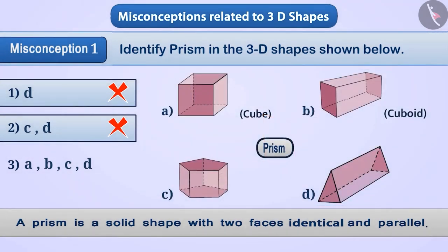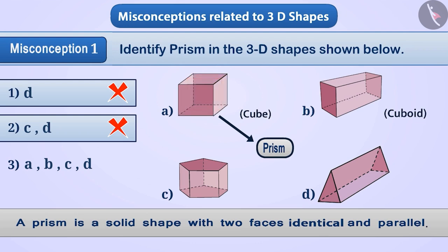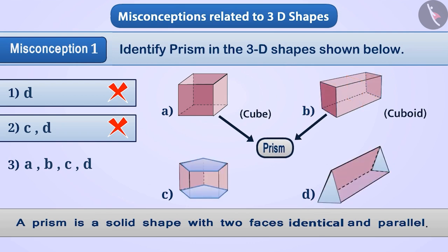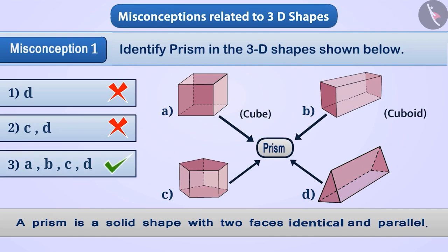A cube is shown in figure A. Any face opposite to another face is identical and parallel, so we can call the cube a prism. Similarly, the cuboid in figure B also has two faces that are identical and parallel, so it is also a prism. Likewise, figures C and D also have two faces that are identical and parallel, so they are prisms too. The correct option is option 3.